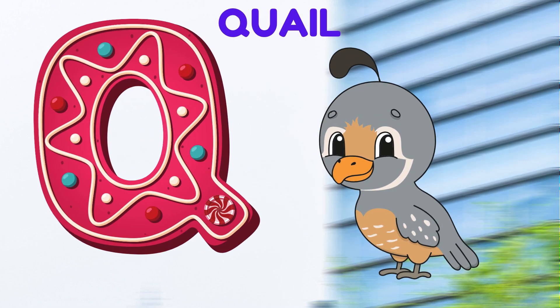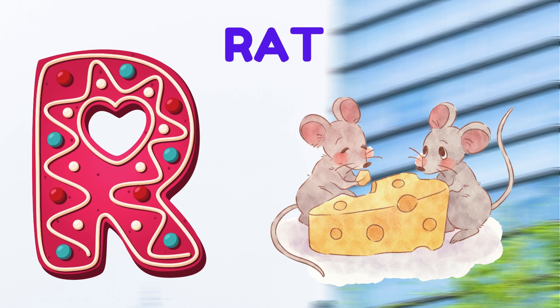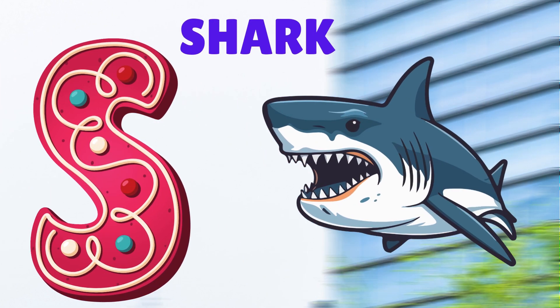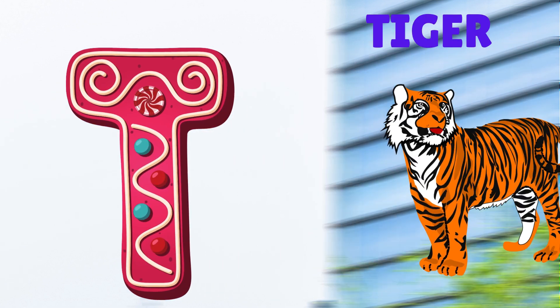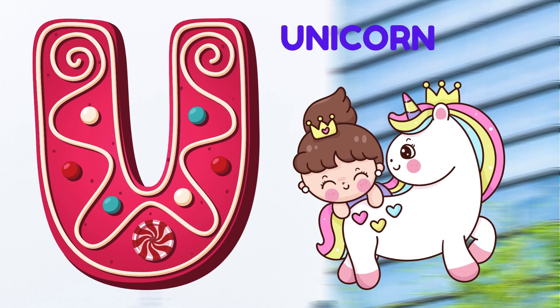Q is for quail, qu-qu-quail. R is for rat, r-r-rat. S is for shark, s-s-shark. T is for tiger, t-t-tiger.